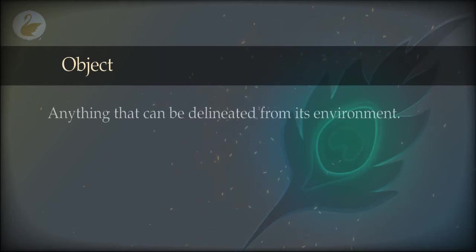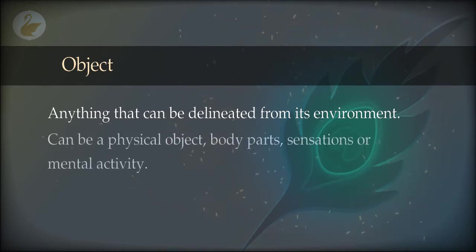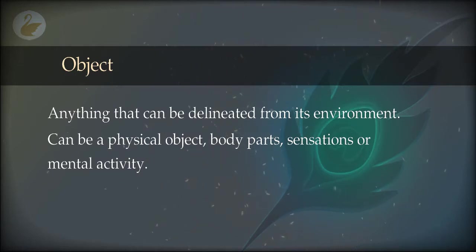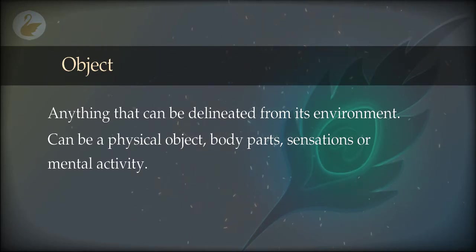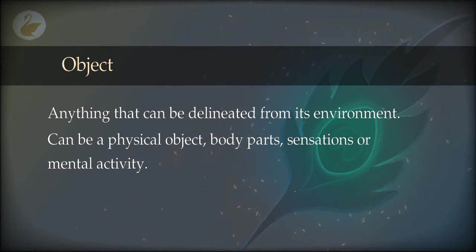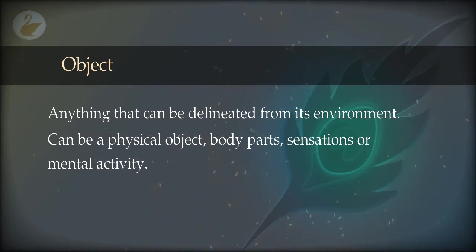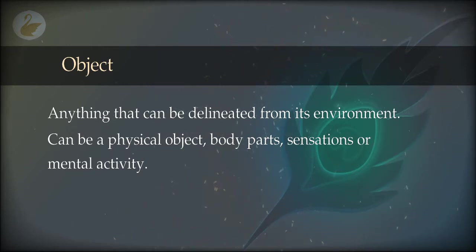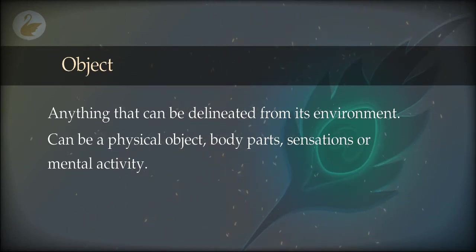Anything that can be delineated from its environment will be called an object. It can be a physical object, it can be the body or parts of the body, it can be sensations of the body or various mental activities, the activities of the layers. We have the ability to distinguish between one perception and another, form concepts around those perceptions, combine different perceptions into one consistent experience and call it an object. It will always be a set of perceptions.